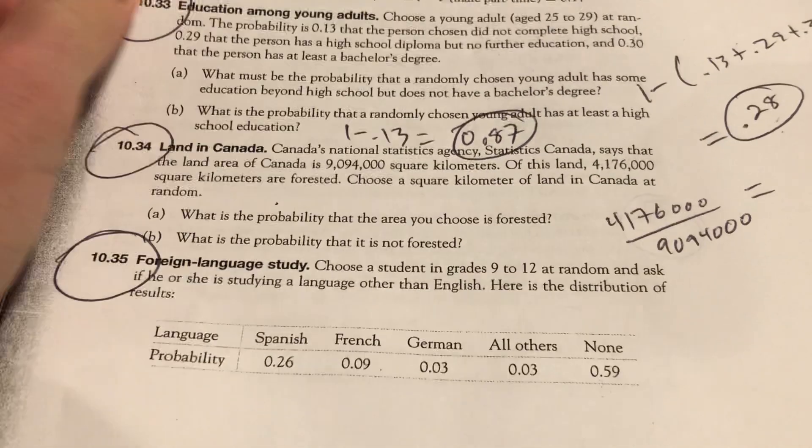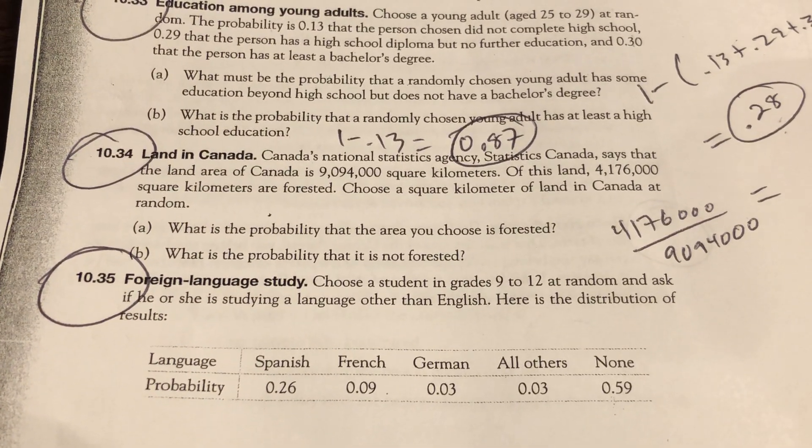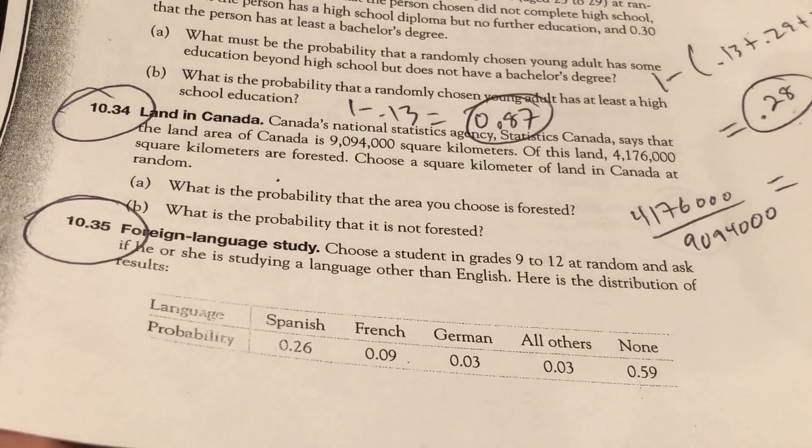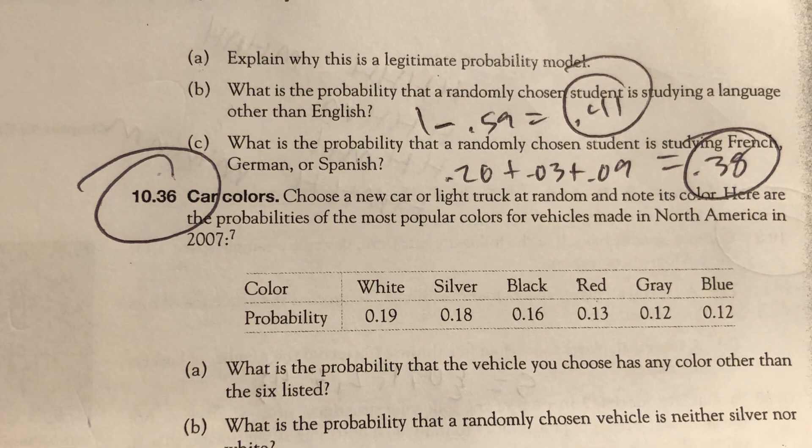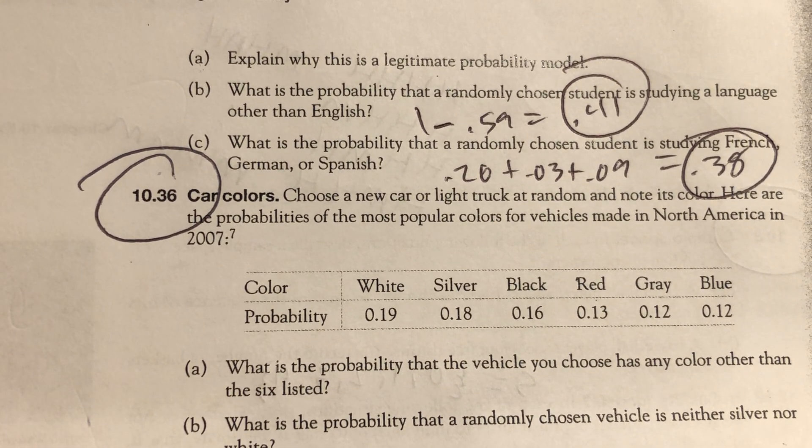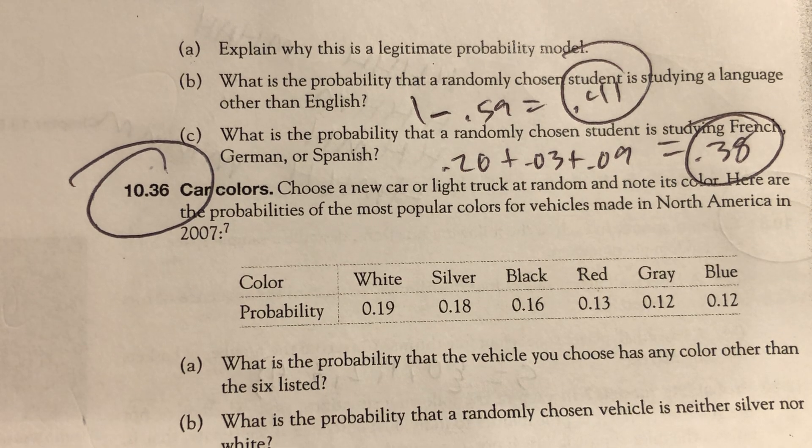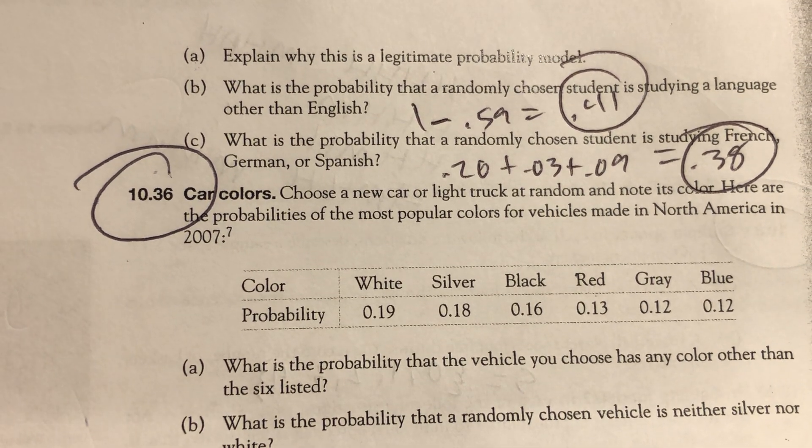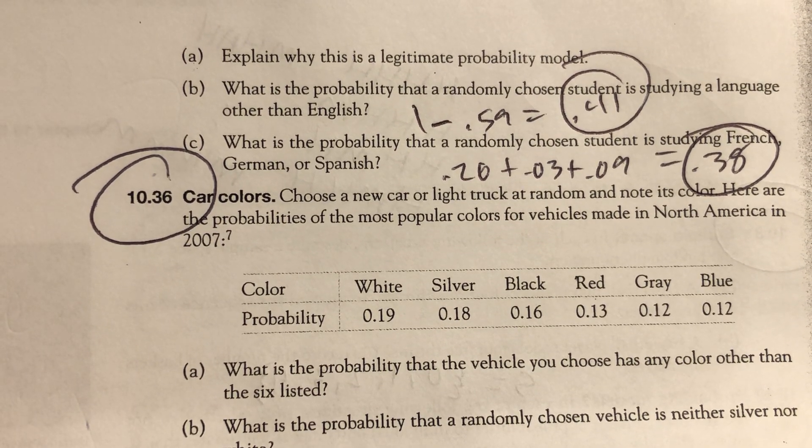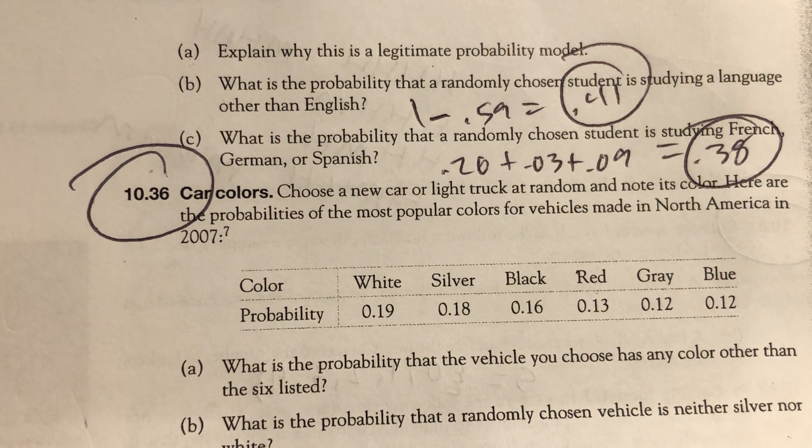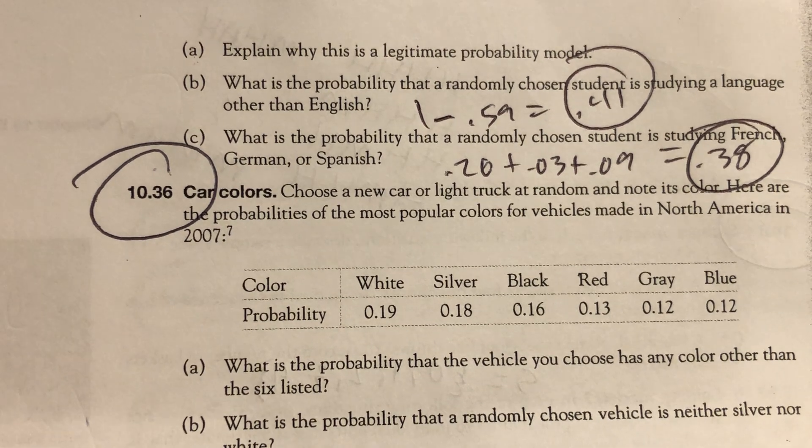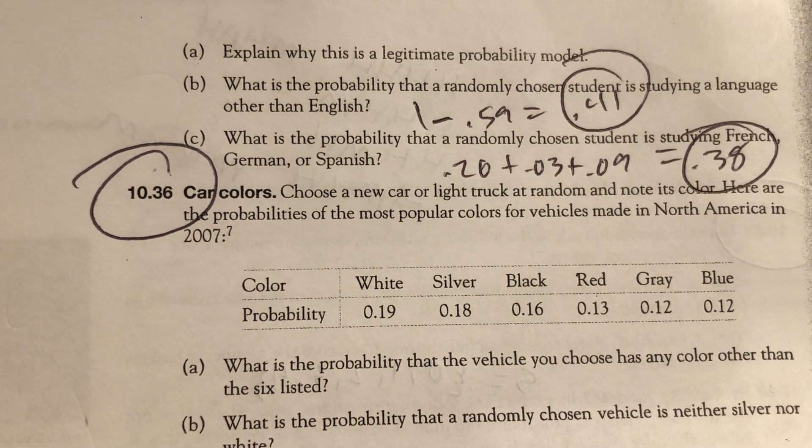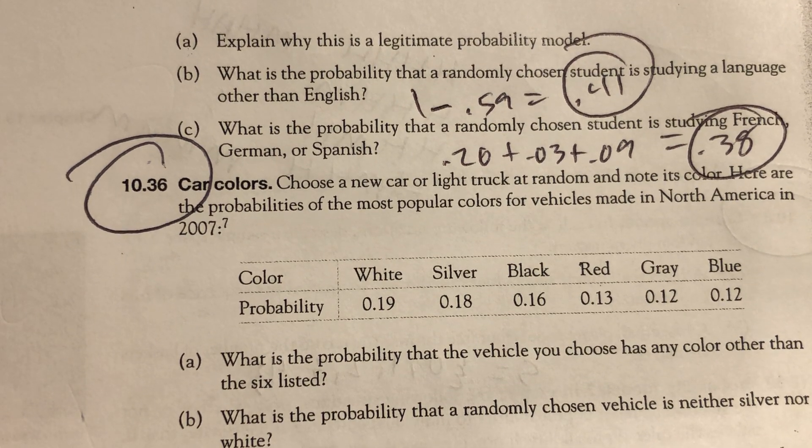Let's talk about foreign language. Choose student grades 9 through 12 at random and ask if he or she is studying a language other than English. Explain why it's a legitimate probability model. Add up all those probabilities, add to one. You got all the languages, and then people that don't take a language. Everything is accounted for. What's the probability a randomly chosen student is studying a language other than English? One minus 0.59 is 0.41. Or you can add up the four first numbers you see. What's the probability that the chosen student is taking French, German, or Spanish? Add up those first three languages.